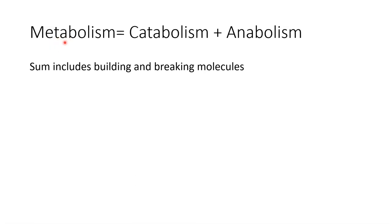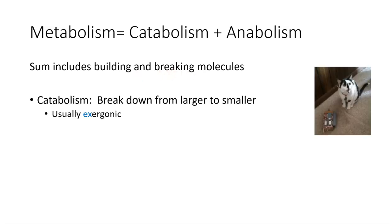Metabolism is a sum, and what we're adding together is catabolism plus anabolism. Metabolism is the sum of molecules being built and molecules being broken. To break them down, let's talk about catabolism. Catabolism is whenever we break down molecules from something very large to something very small. A good example would be eating a sandwich or digesting any type of food.